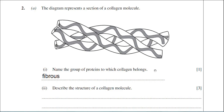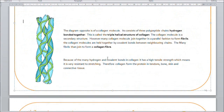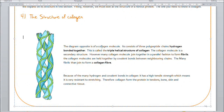Part two is asking you to describe the structure of a collagen molecule. I've explained what a collagen molecule is in my typed notes. Collagen consists of three polypeptide chains which are hydrogen bonded together — never forget that. It's actually a triple helical structure, and the collagen has a secondary structure. So that's basically what a collagen molecule is: three polypeptide chains joined together.